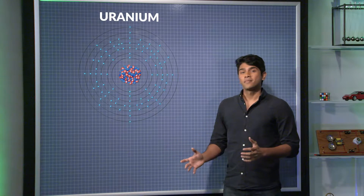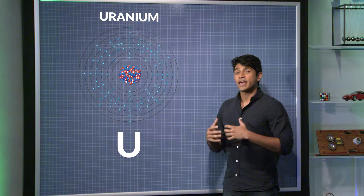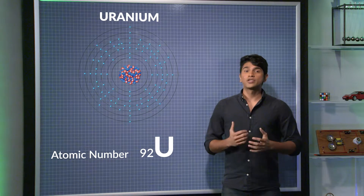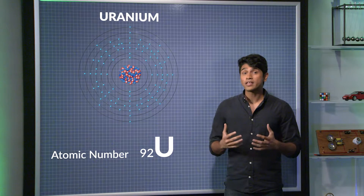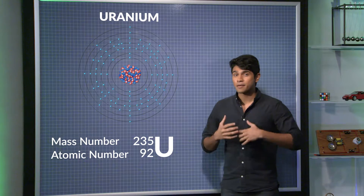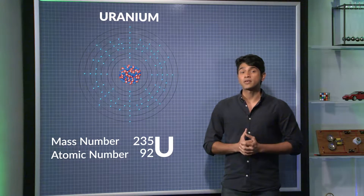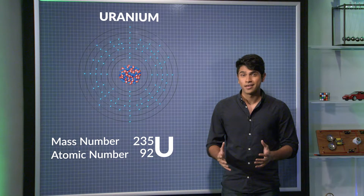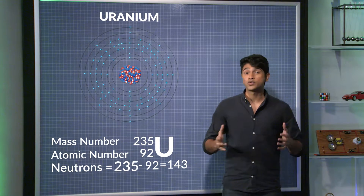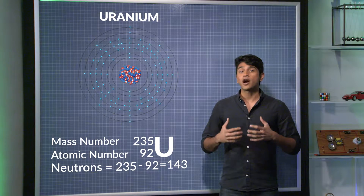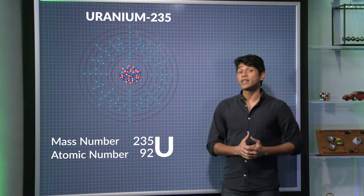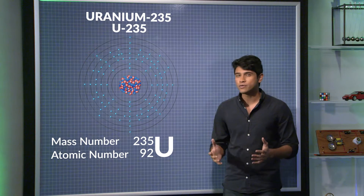For example, this is uranium. The U is the symbol for the element uranium. 92 is the atomic number, which is the number of protons — so all atoms of uranium have 92 protons. The 235 is the mass number, the total number of protons and neutrons combined. If we know there are 92 protons and the total is 235, then there must be 143 neutrons. Other ways to write it are uranium-235 or U-235.